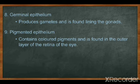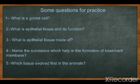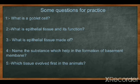So these are nine types of epithelial tissue — some on the basis of structure and some on the basis of function. Now some questions regarding this: What are goblet cells? Goblet cells are present in columnar epithelial tissue, pseudostratified, and glandular tissue. What is epithelial tissue and its function? What is epithelial tissue made of? Name the substance which helps in the formation of the basement membrane. Which tissue evolved first in animals?